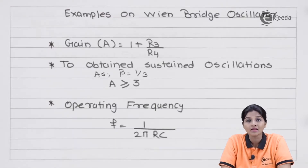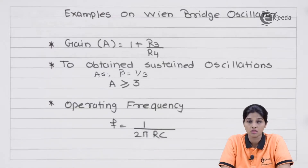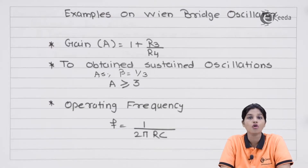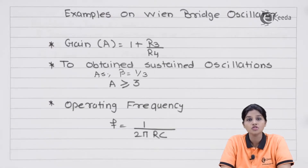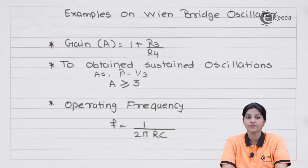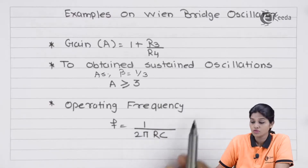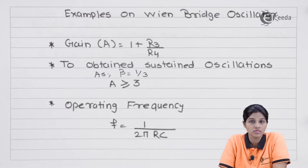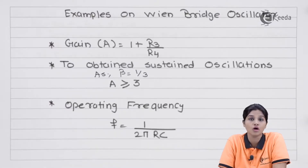This reference voltage remains constant and does not affect the frequency. The value of R3 can be used to change the gain of the amplifier circuit. The frequency of the oscillator depends on the frequency-sensitive arm, which uses a parallel combination of R and C. The formula for frequency of oscillation is f = 1 / (2πRC). By changing the values of R and C we can vary the oscillation frequency.